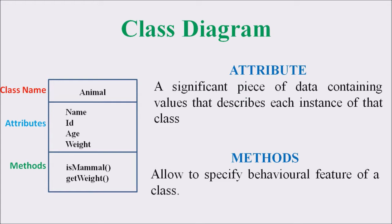So we are considering the attributes for this Animal class as name, ID, age, and weight. Finally, the last compartment comprises the behavioral pattern of that particular class. For the Animal class, we are mentioning different functions like isMammalOf, which mentions whether the given animal is a mammal or not, and getWeight, which calculates or reads the weight associated with a particular animal. These three compartments mention a class's properties and attributes associated with a particular set of objects.